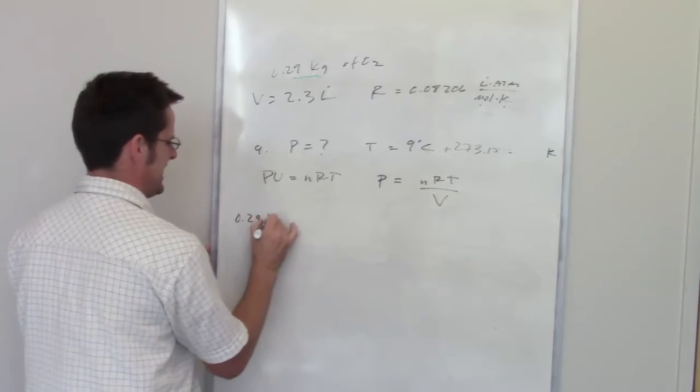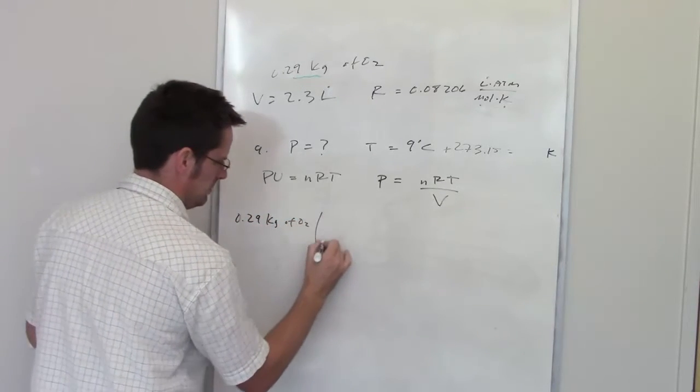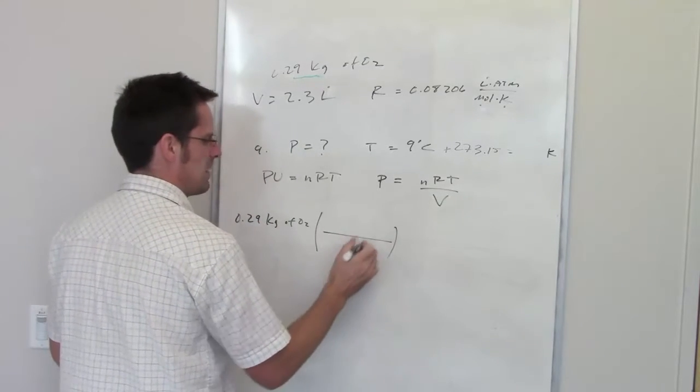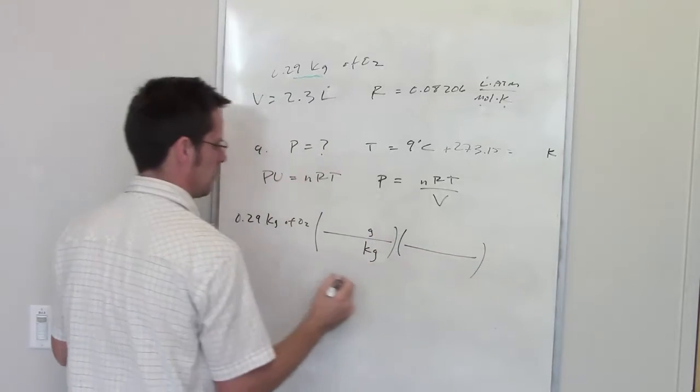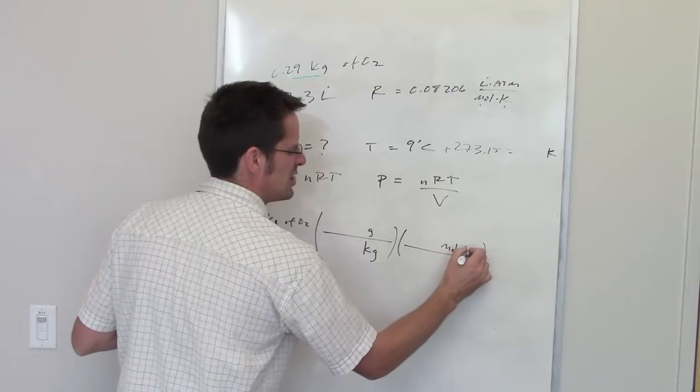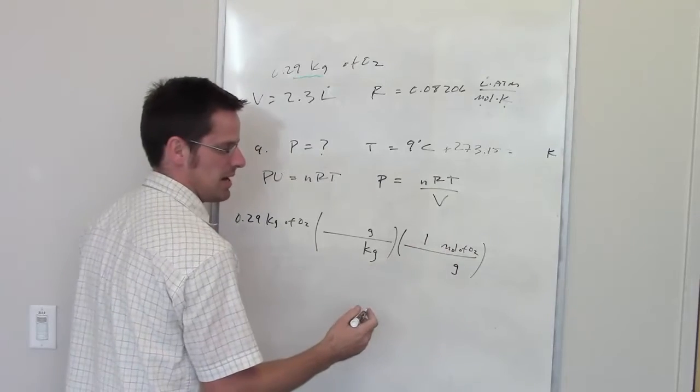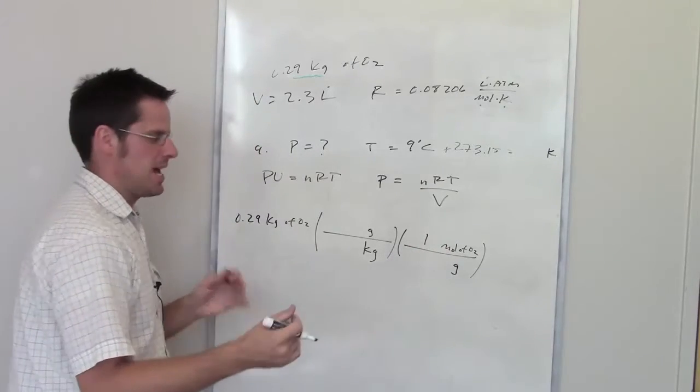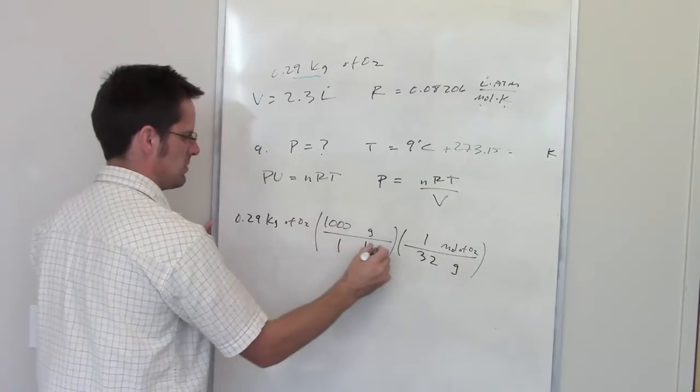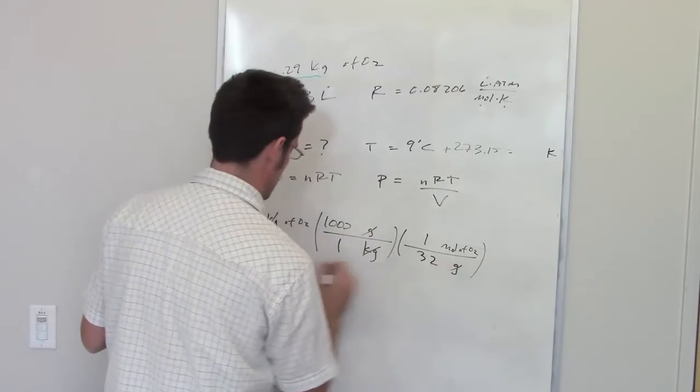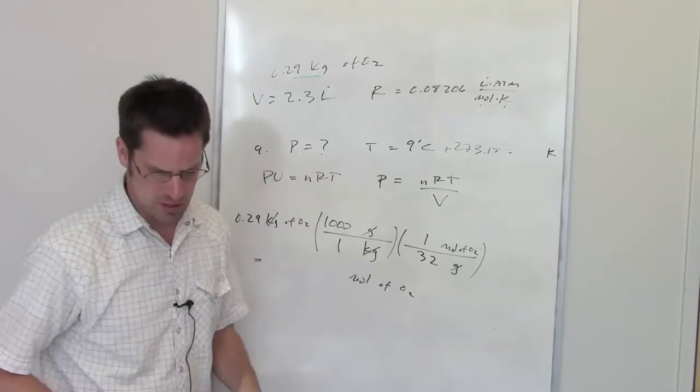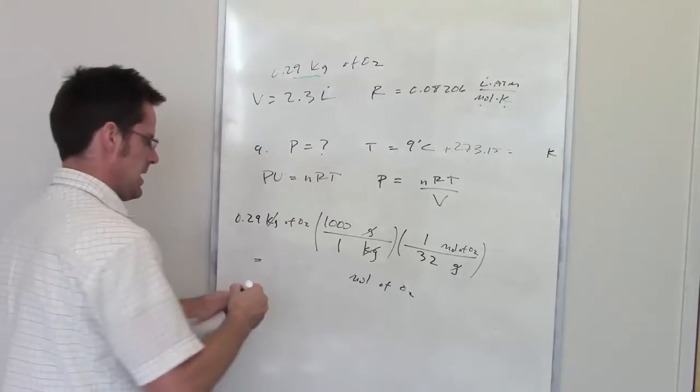Let's do some dimensional analysis. I've got 0.29 kilograms of O2. I want to cancel out kilograms, so I'm going to throw that in the basement. I bet I could put grams on top so that I can eventually go to the molecular weight of O2. I can throw grams in the denominator, and I can put moles in the numerator. One mole of O2 weighs how many grams? Well, each individual oxygen atom is 16, so that should be 32. How many grams are there in a kilogram? One kilogram contains 1,000 grams. My kilograms cancel each other. My grams do, and I end up with moles of O2. And the number of moles of O2 I calculated out for this problem is 9.06.